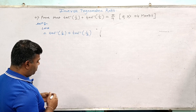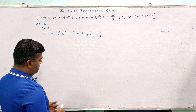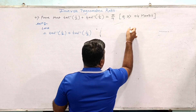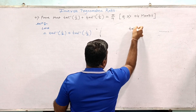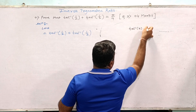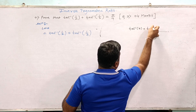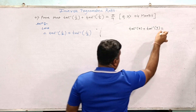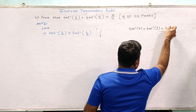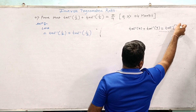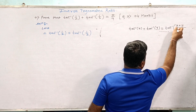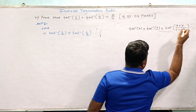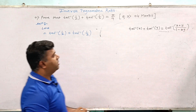Simply apply the formula for inverse trigonometric ratios: tan inverse x plus tan inverse y equals tan inverse of (x plus y) divided by (1 minus x times y). This is the formula we will use.